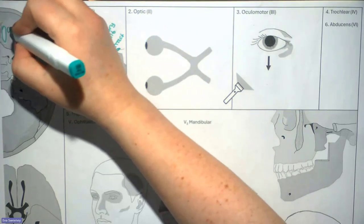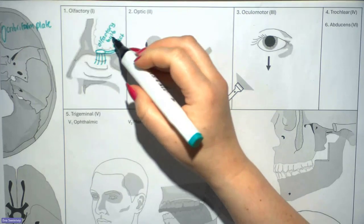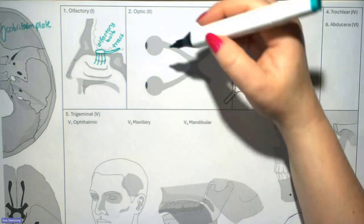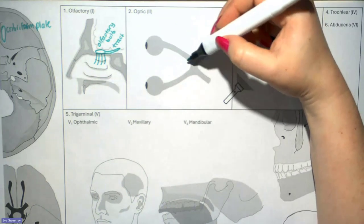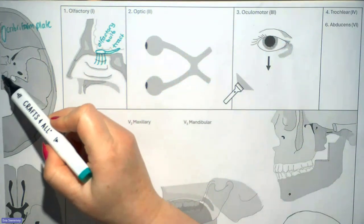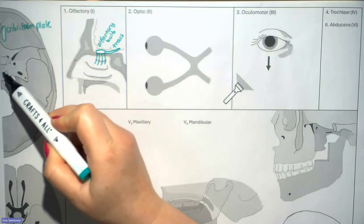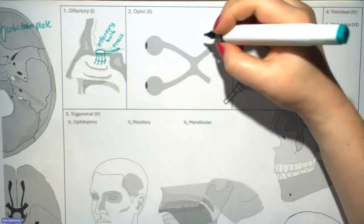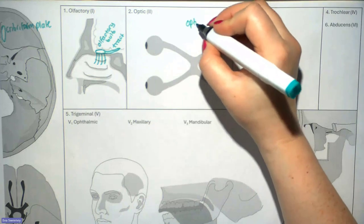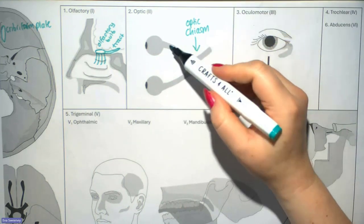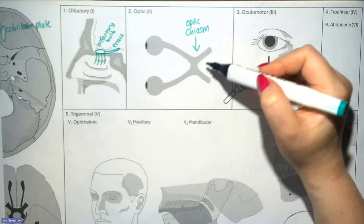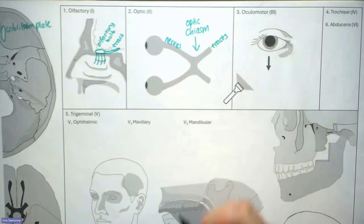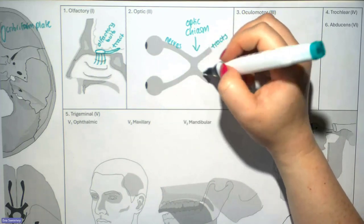So we know the cribriform plate and the olfactory nerve. The second cranial nerve is the optic nerve. We can see this X-shaped structure, which sits approximately here in the skull, just superior to this little hollow called the pituitary fossa. This X-shaped structure is called the chiasm. We have our optic nerves right and left, and our two optic tracts going back to the brain. The chiasm allows a little bit of crossing over of fibres.